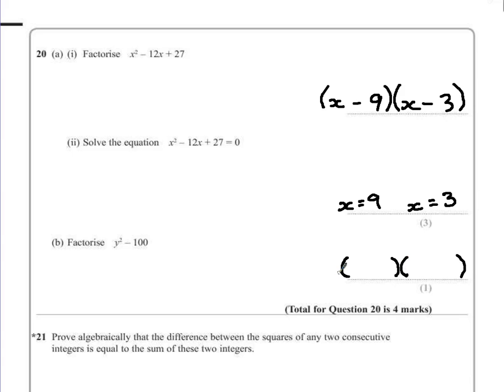Because we have a quadratic that we're factorizing as two brackets, because we have a single y squared, it means we have to have y at the beginning of each bracket. I want two numbers that will multiply together to give me negative 100, but add to give me nothing. Now the only way that can actually happen is if we have positive 10 and a negative 10.